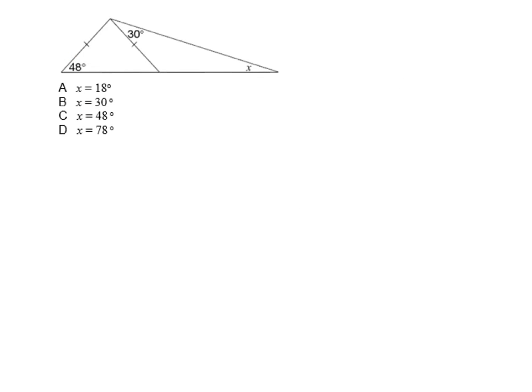Next question. I observe here I have two triangles. The triangle on the left is an isosceles triangle, and I know that because of these little lines here that tell me those sides are equal. I know that with an isosceles triangle the two base angles are going to be equal to each other. So based on that I can know that this angle here is going to be 48 degrees. And once I know that angle is 48 degrees, I can also observe that I have a supplementary angle, and I know that supplementary angles equal 180 degrees.